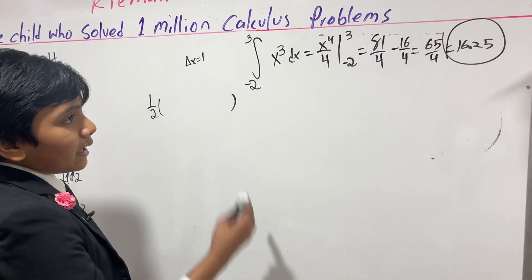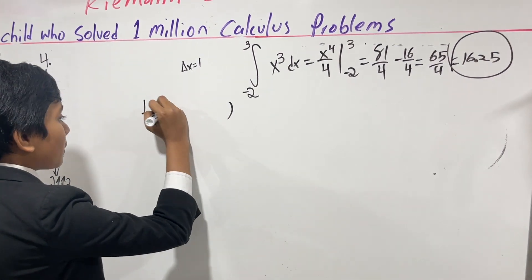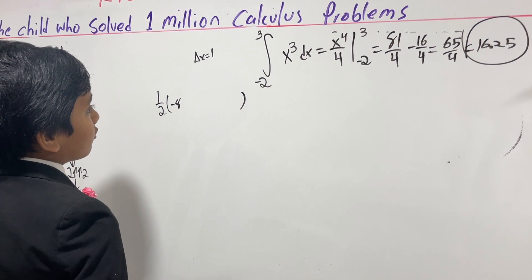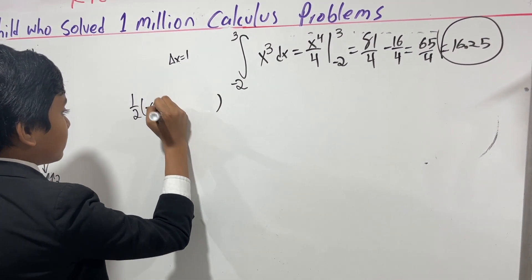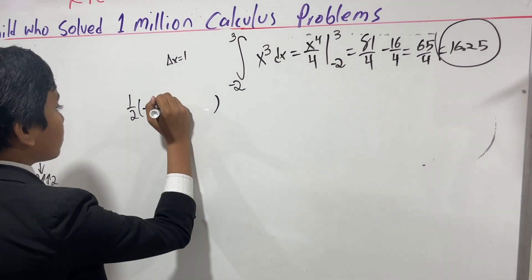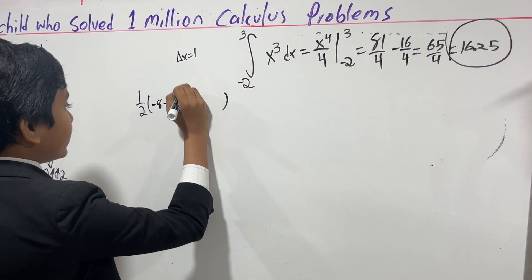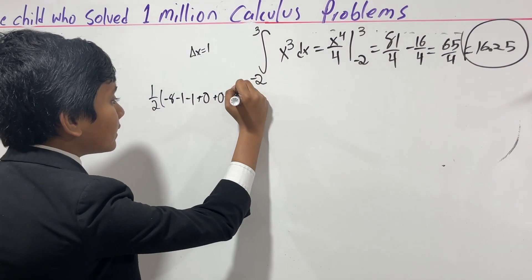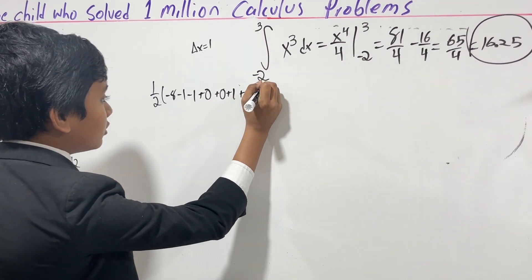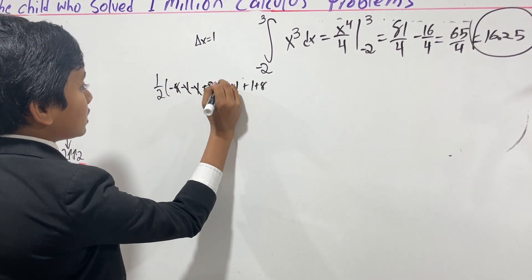So what is f of x0 anyways? Well, what is f of minus 2? That would be minus 2 cubed or minus 8. Following that rule, what is f of x1? Well, minus 1 cubed is minus 1. Then we follow that rule again. We get minus 1 cubed plus 0 cubed, then plus 0 cubed plus 1 cubed, then plus 1 cubed plus 8 cubed. And hey, these actually cancel out.